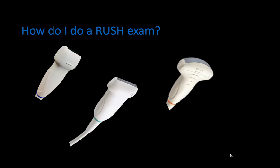So how are we going to do a RUSH exam? Traditional teaching includes using the curvilinear or abdominal probe for all of the views, including the cardiac views. However, you can also use the cardiac or phased array probe for cardiac views and the linear probe for pneumothorax assessment. You can switch between probes for each part of the exam, recognizing that it will take a bit longer. For a refresher on which probes are best for which indication, please refer to the probes and knobs lecture on the Cooper Ultrasound YouTube channel.